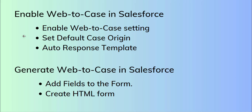Now, here is what we need to do. First, we need to enable the Web to Case settings. Then we need to set the default case origin — there is a field in the Case object named Case Origin, and in the Web to Case setting that default value should be 'Web'. Next, we need to add a response email template so that when customers submit the case form, a response email is automatically sent to them. Finally, we need to generate the Web to Case HTML form by adding the required case fields.